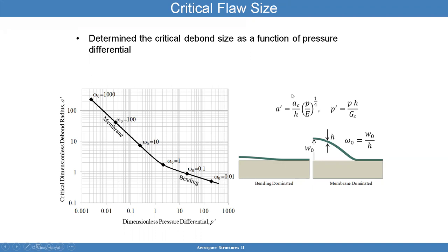Once you have AC, you can identify the critical flaw size. Apply a factor of safety first and then design to that flaw size. The predictions from finite elements compared to the closed-form solutions show that the closed-form solution doesn't do too bad. Comparing 3D models versus axisymmetric models, where you can revolve 360 degrees, the axisymmetric model is computationally more efficient, and both do relatively well.